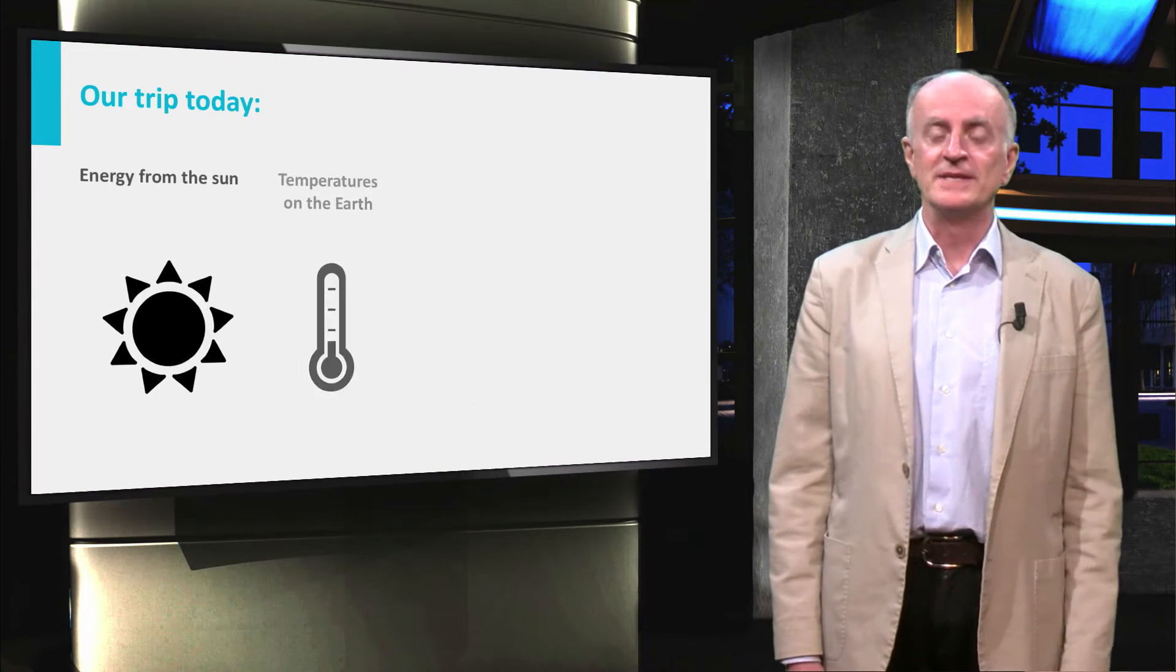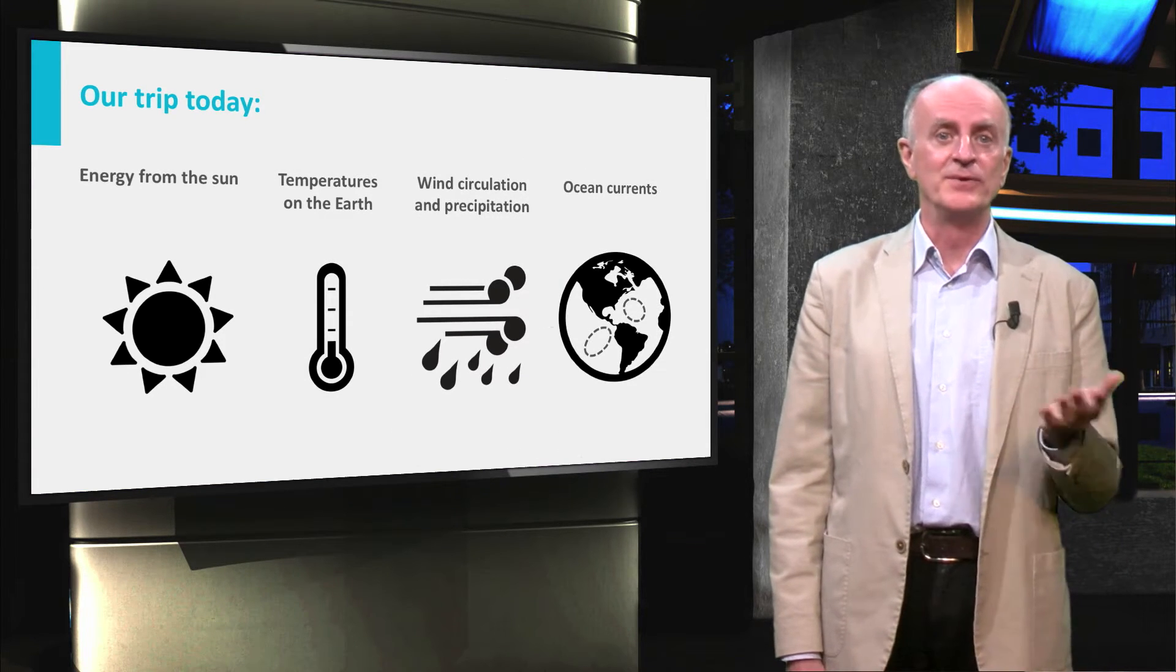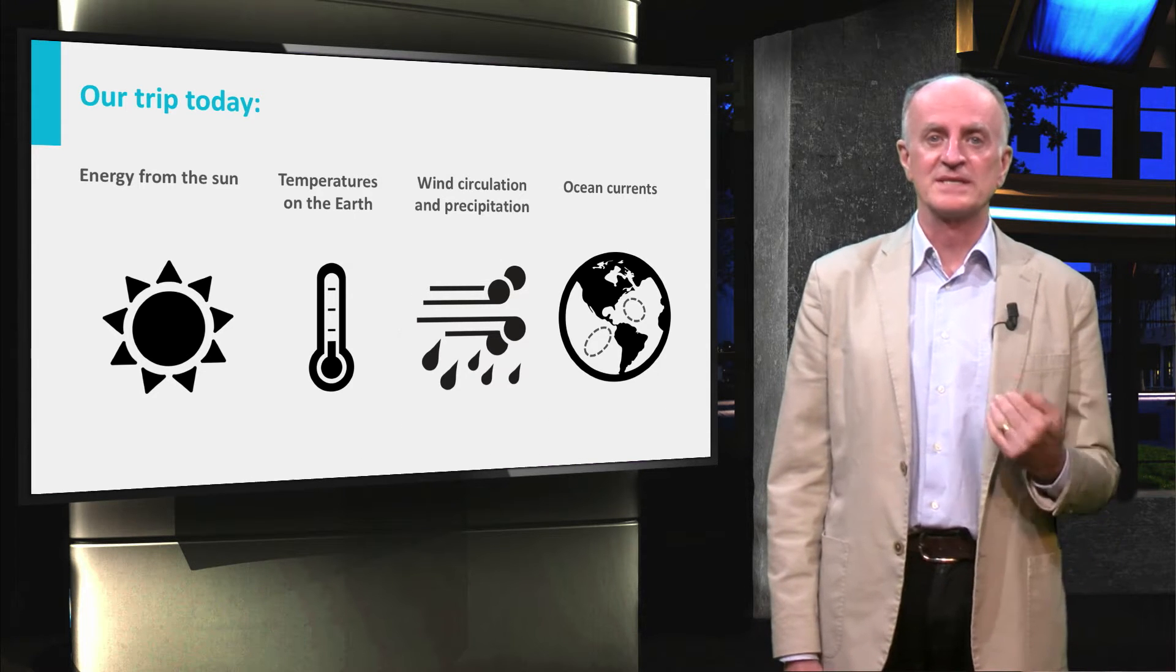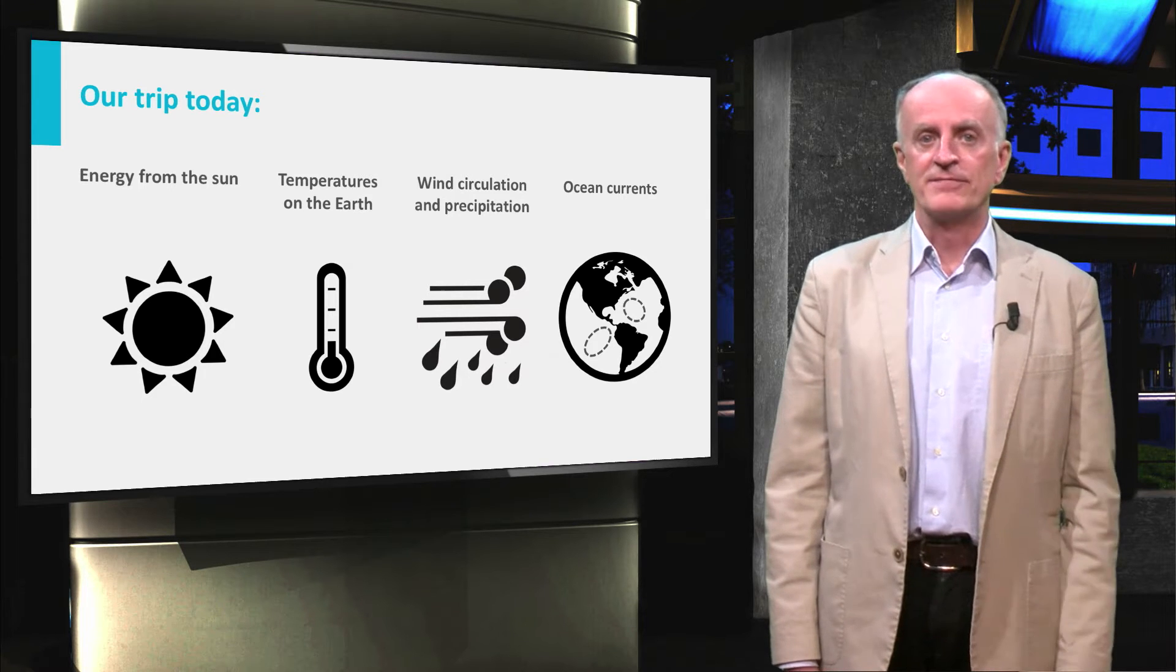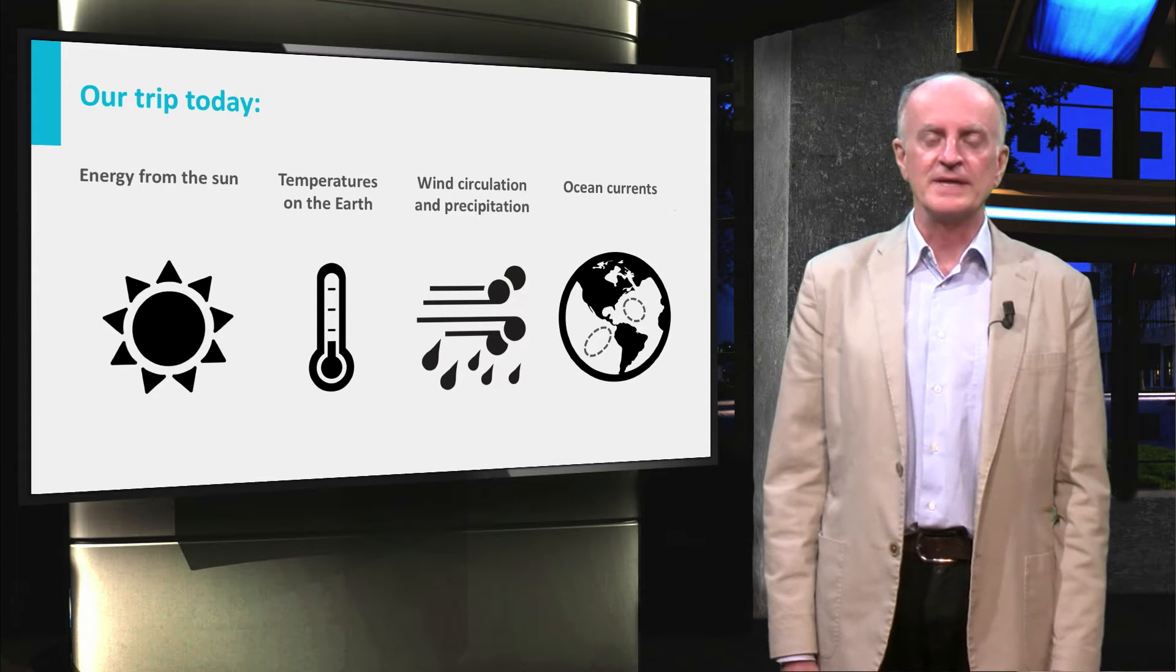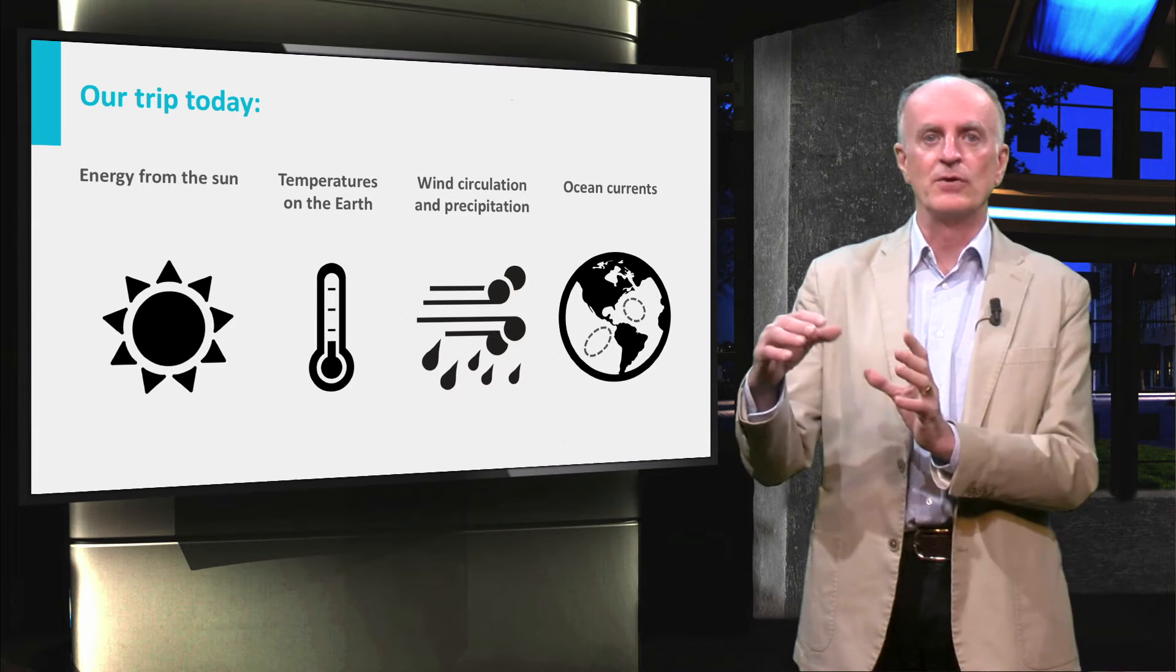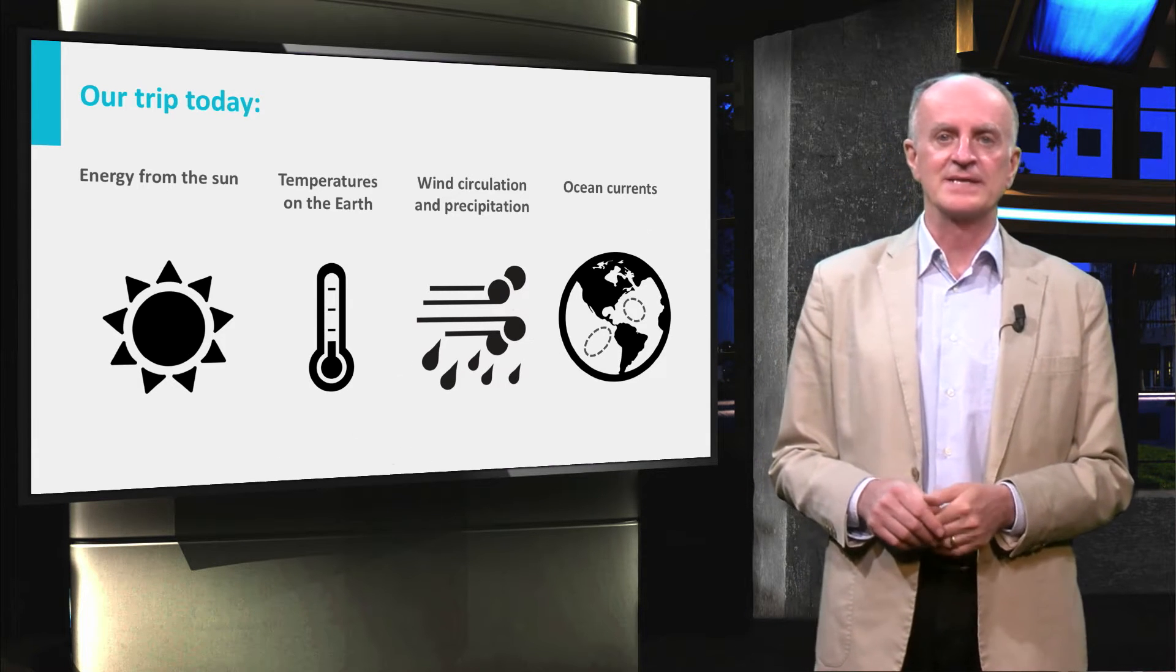Specific climatic conditions in a specific place on Earth, for instance where you are living, are very much controlled by temperatures, winds, precipitation, and ocean circulation. The first order distribution of these phenomena can be understood by looking at how the energy radiated from the sun is distributed over the Earth. These are the issues we will discuss in this clip.